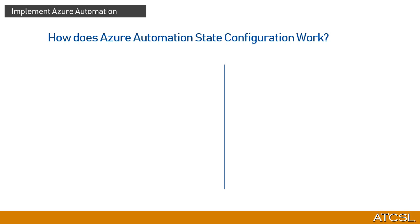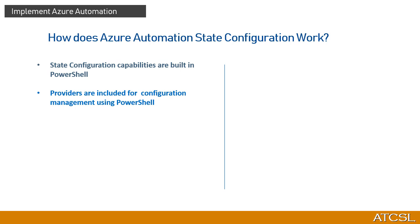Before the demo, let's understand how Azure Automation State Configuration works. It uses a capability built into PowerShell version 4. Many providers are baked into PowerShell for configuration management, covering file systems, registry, roles and features, processes, services, packages, logs, scripts, and more. A key point is that Azure Automation State Configuration is a declarative technology, not imperative — meaning we only specify what we want, not how to do it. The focus is on the desired state, not the implementation code.